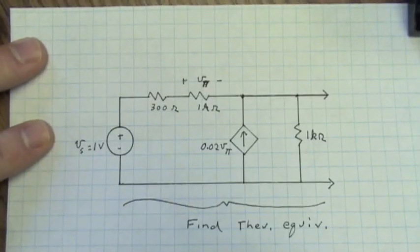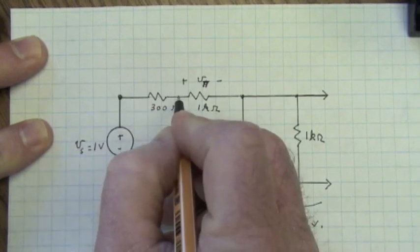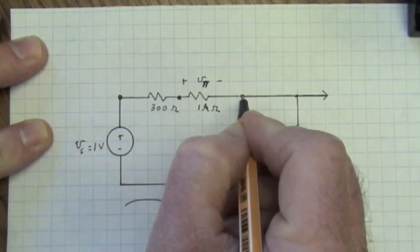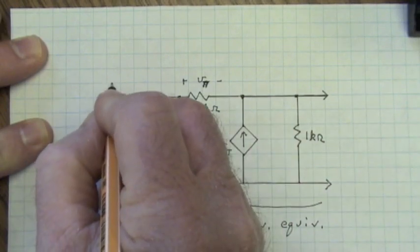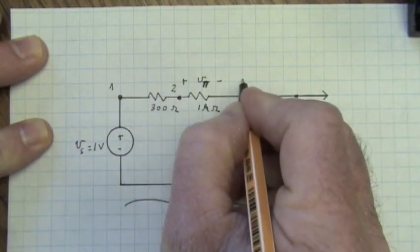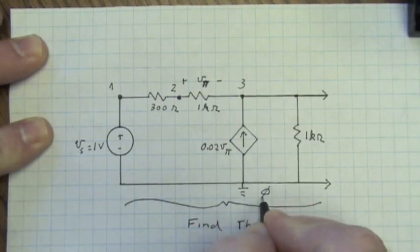Another way to proceed would be via node voltage analysis. We can identify a node here, a node here, a node here, which includes both of these connection points. Let's call that node 1, node 2, node 3. And let's use this as our reference node, which will be, let's say, node 0.